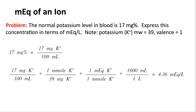So 17 milligram percent, expressing potassium as weight per 100 mL, is the same as 4.36 milliequivalents per liter — an expression of its chemical activity.